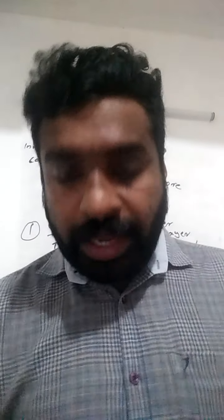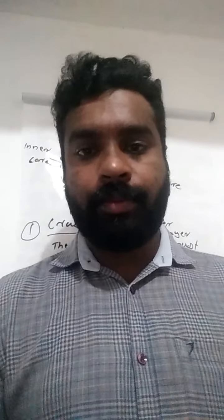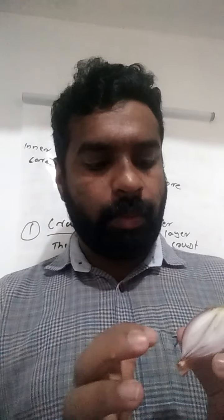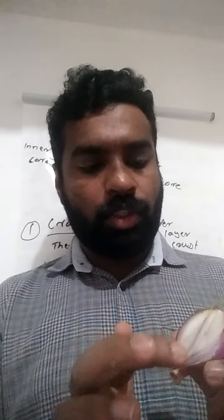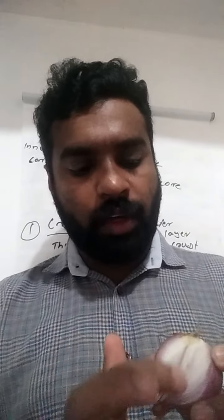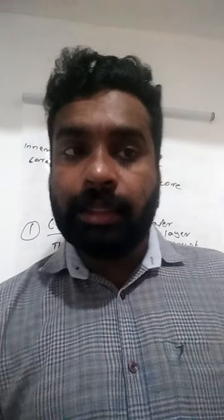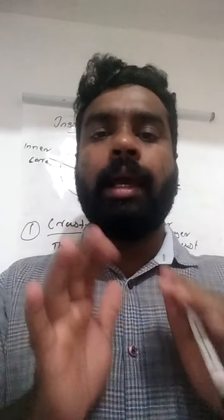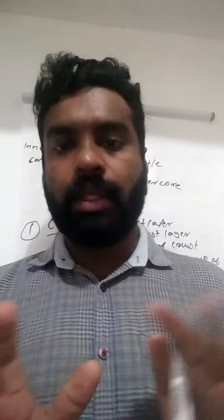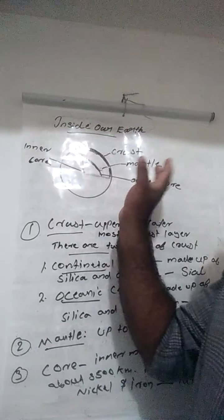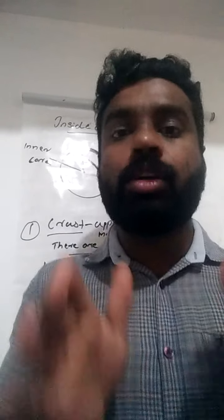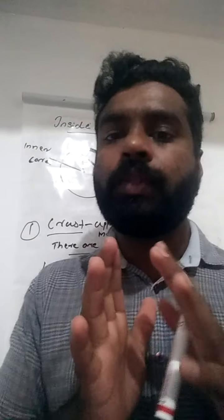Mainly, Earth has three layers. If you take an onion and cut it, you can understand that it is made up of different layers. Like this, Earth also has different layers. Mainly, Earth has three layers — that is crust, mantle, and core. These are the three layers of Earth.